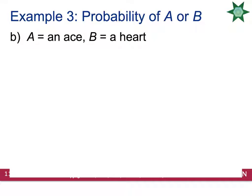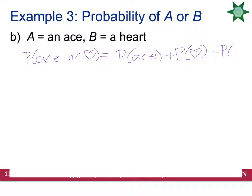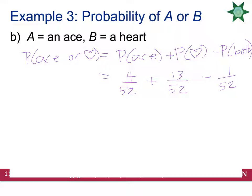How about the probability of drawing an ace or a heart? Those are not mutually exclusive because there is an ace of hearts in the deck. So the probability of an ace or a heart is P(ace) + P(heart) − P(both). There are 4 aces out of 52, 13 hearts out of 52, and 1 ace of hearts to subtract. So 4 + 13 − 1 = 16 out of 52, which reduces to 4 out of 13.